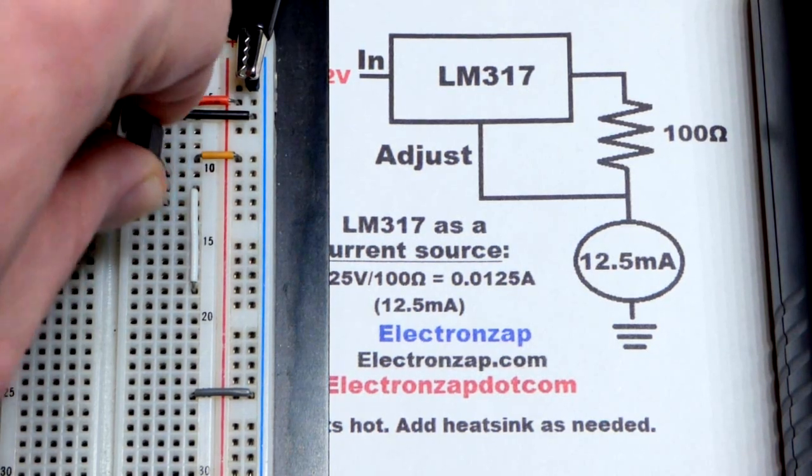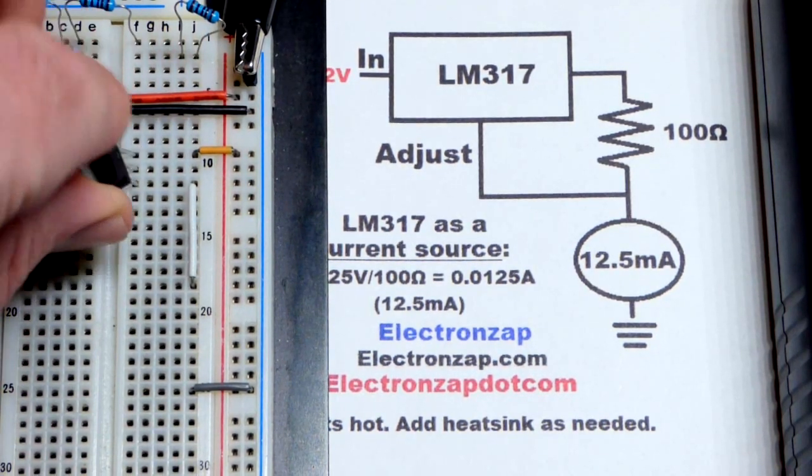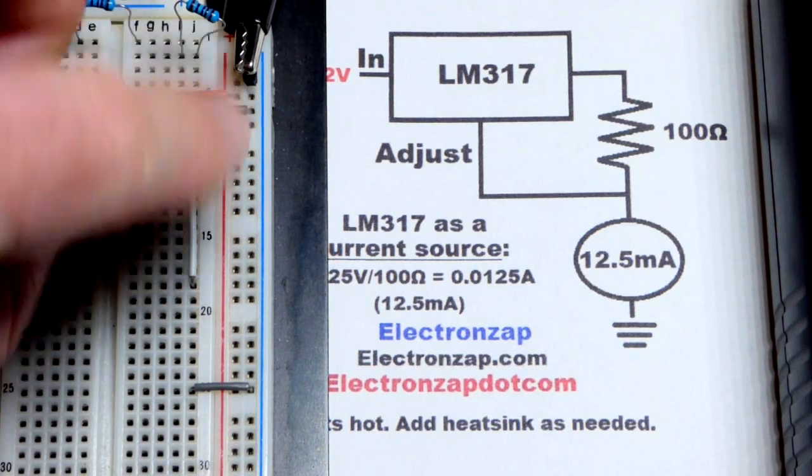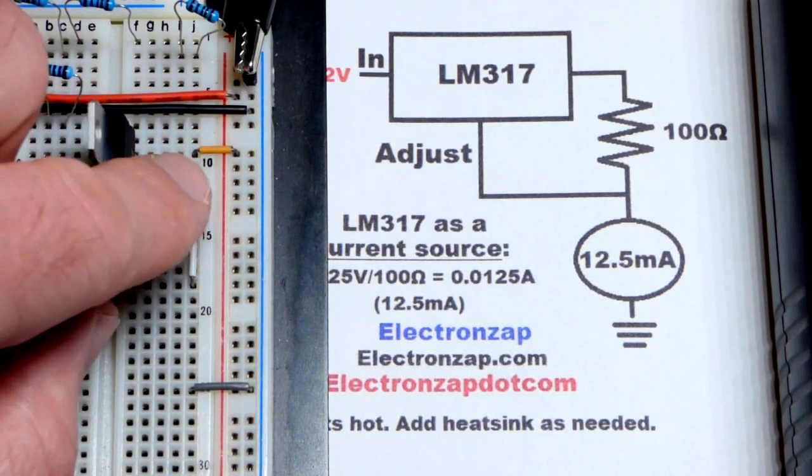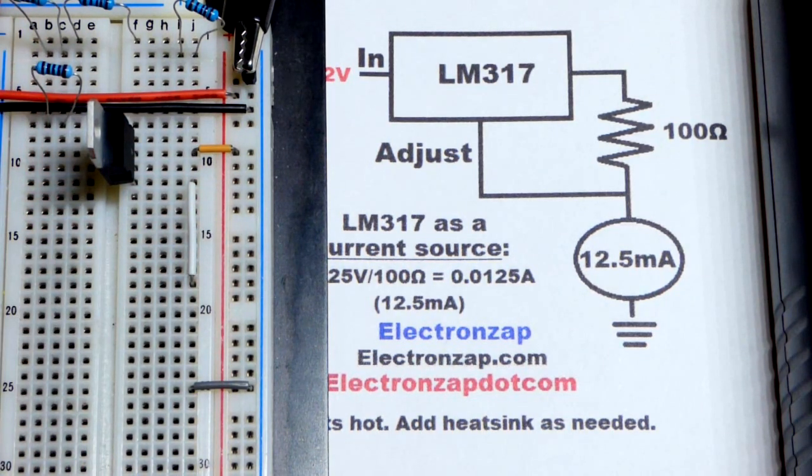The out is on its own row right now. Actually, let's move this over a little bit right there. And you can see that the white jumper is to the adjust. So last video, it was at the out. But we have to put it at the adjust.